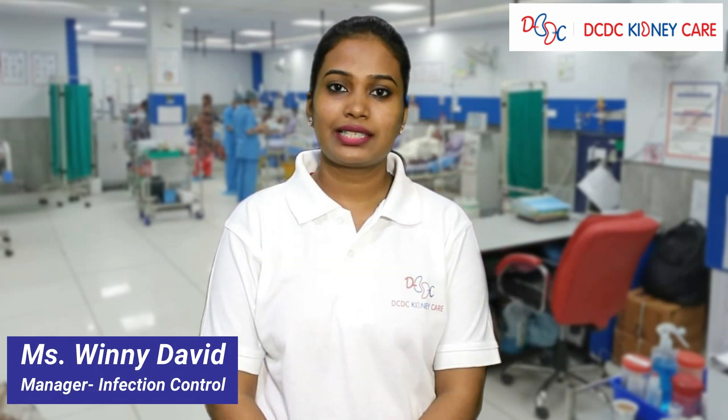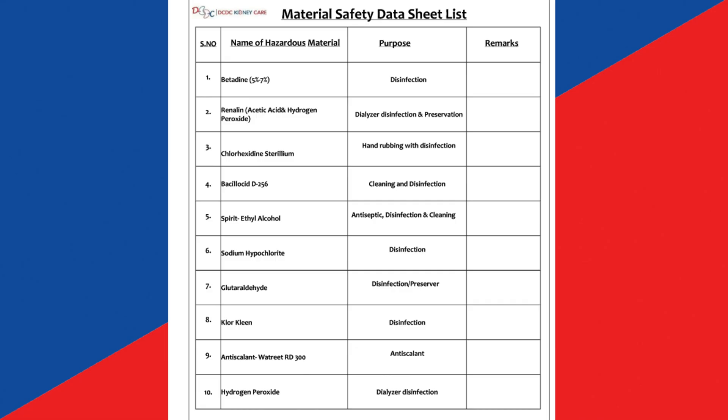Material safety data sheet list includes: Beta-din, Chlorhexidin, D125, Renolin, D256, Phosphorhexidin, Spirit or alcohol, Liquid paraffin, Sodium hypochlorite, Citric acid, and many more.